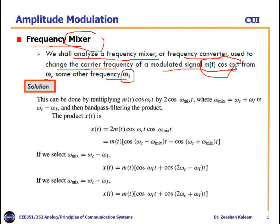This can be done by multiplying M(t)cos(ωC·t) — our current signal — by 2cos(ωmix·t), where ωmix is equal to ωC plus ωI, or it can be ωC minus ωI. After multiplication we perform band-pass filtering of this product to receive the desired frequency signal, which is the signal at frequency ωI.